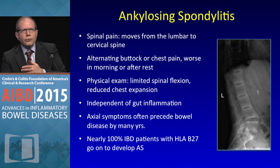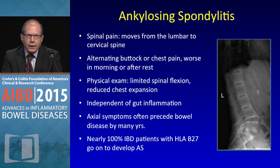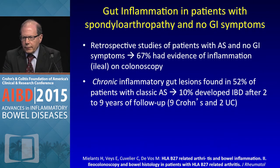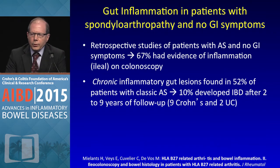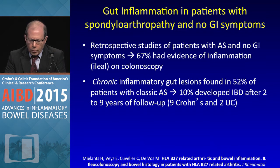Ankylosing spondylitis is not just lumbar but also cervical, so you have to ask patients not only about buttock pain and back pain but also chest pain. Unfortunately, this is often independent of gut inflammation, and almost all of these patients have HLA-B27. In a retrospective study of patients with ankylosing spondylitis and GI symptoms, two-thirds had evidence of ileal inflammation on colonoscopy, and 10 percent developed IBD after two to nine years of follow-up — more Crohn's than UC.